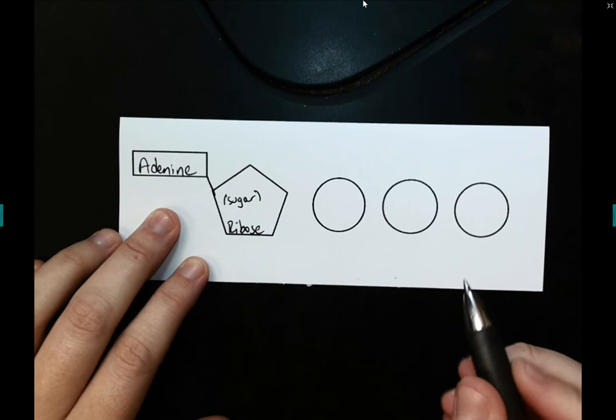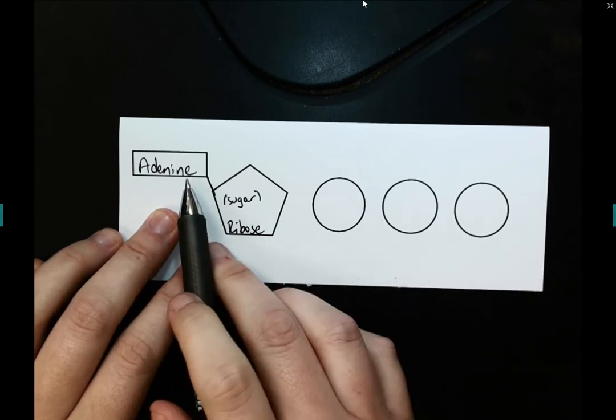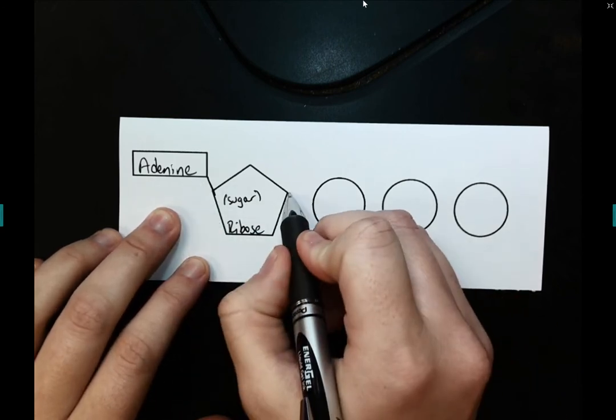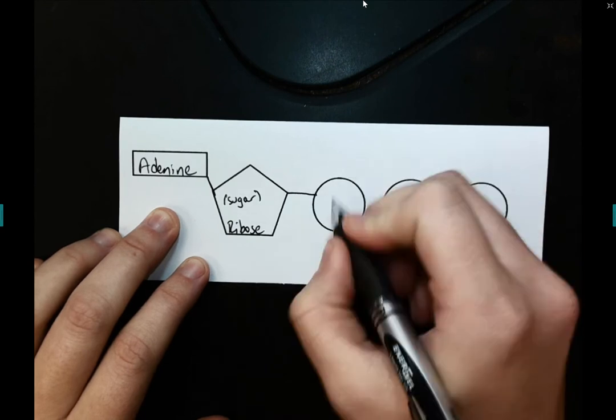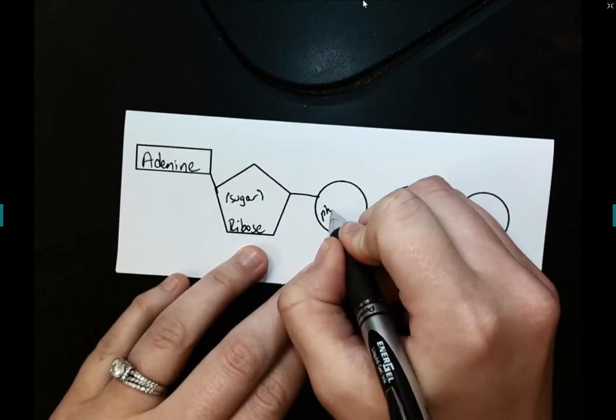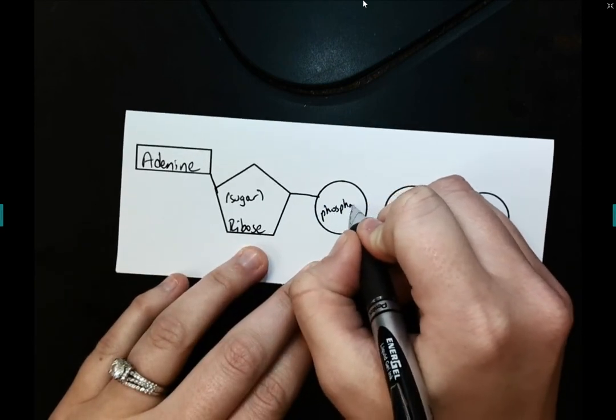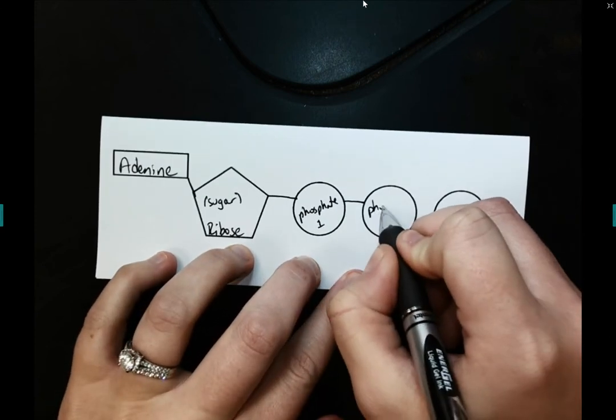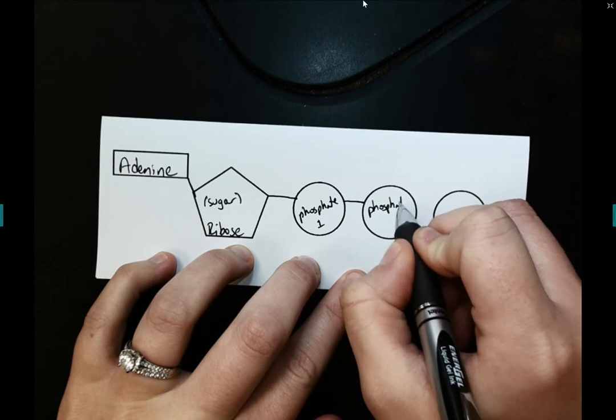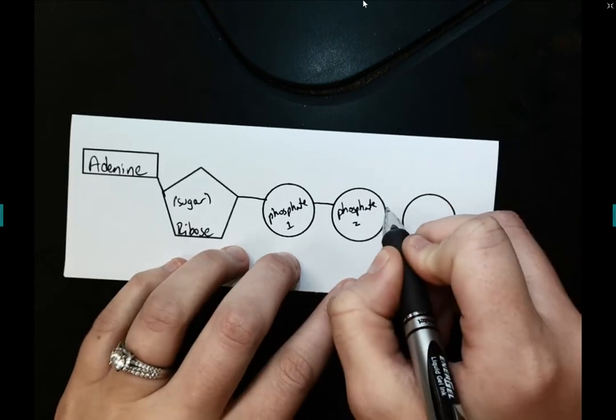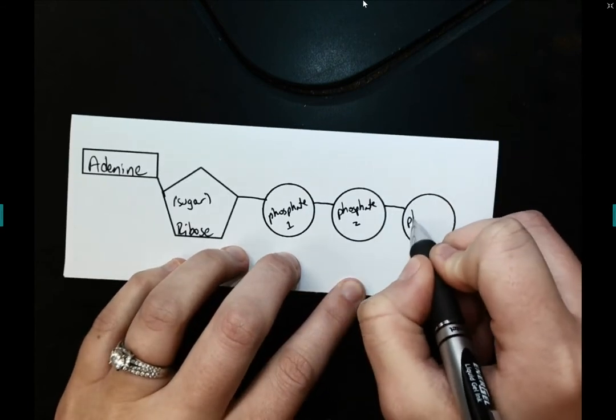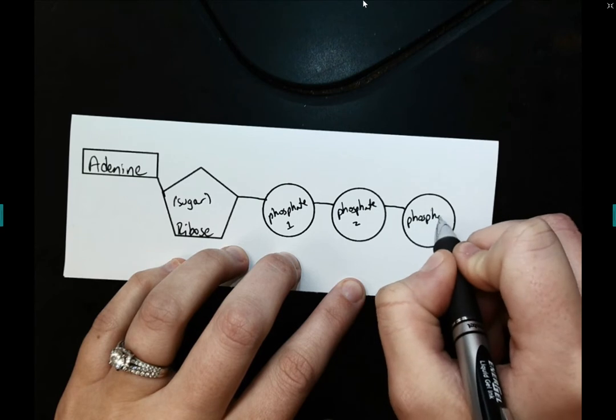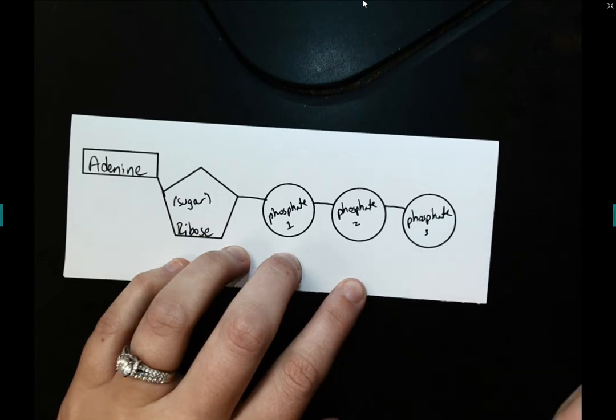Again, I know it's a sugar because it ends in O's. So adenine connects to ribose. The ribose then connects to the first phosphate. So phosphate one, which connects to phosphate two, and then connects to the third phosphate.